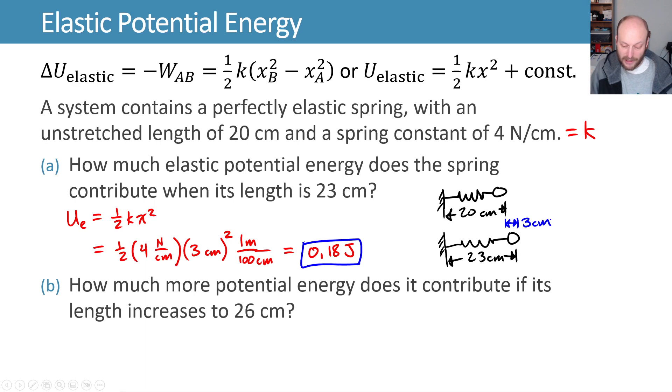That means that we're stretched from our equilibrium position of x equals 0 at the unstretched length, 3 cm worth. So I chose my equilibrium position as x equals 0 and stretched myself 3 cm from there.